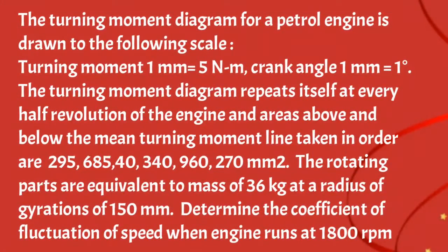The turning moment diagram for a petrol engine is shown with the following scales: turning moment — 1 mm equals 5 Nm; crank angle — 1 mm equals 1 degree. The turning moment diagram repeats itself at every half revolution of the engine, and the areas above and below the mean turning moment line taken in order are 295, 685, 40, 340, 960, and 270 mm². The rotating parts are equivalent to a mass of 36 kg at a radius of gyration of 150 mm. Determine the coefficient of fluctuation of speed when the engine runs at 1800 rpm.